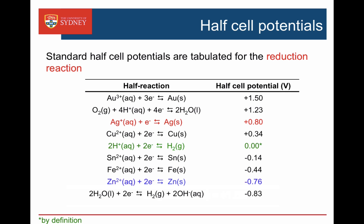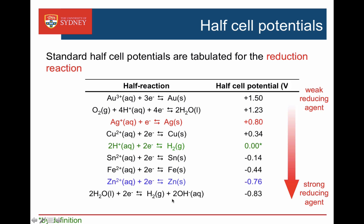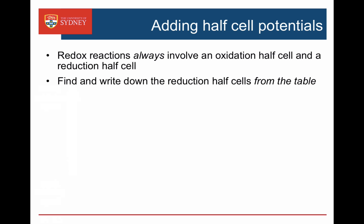Half cell potentials are collected together in tables, but they're always tabulated as reduction reactions — gain of electrons. At the top we have gold ions being reduced to gold metal, and at the bottom we have water being reduced to hydrogen and hydroxide. The ones at the top are weak reducing agents and strong oxidizing agents, while the ones at the bottom are strong reducing agents and weak oxidizing agents. Redox reactions always involve an oxidation half cell and a reduction half cell, so we can't couple two reduction half cells — we have to reverse one and turn it into an oxidation.